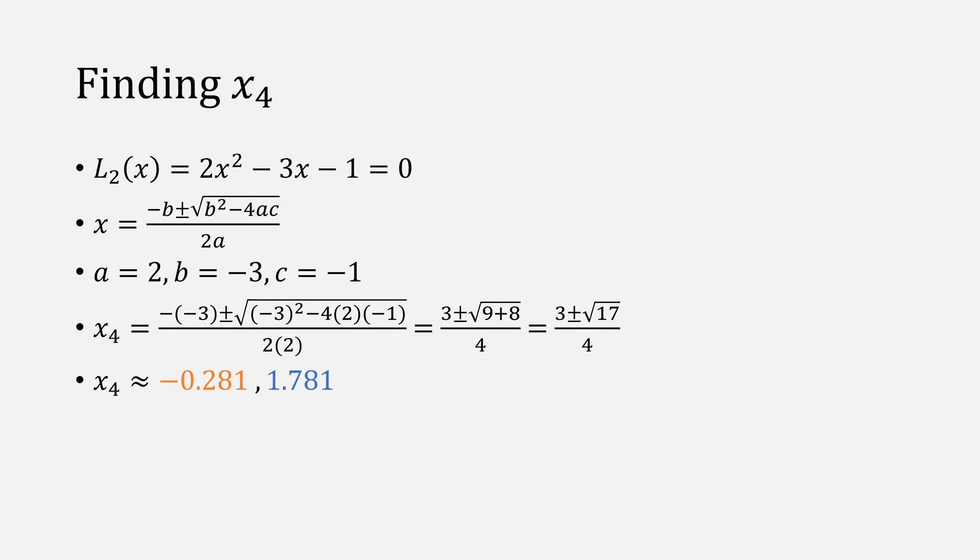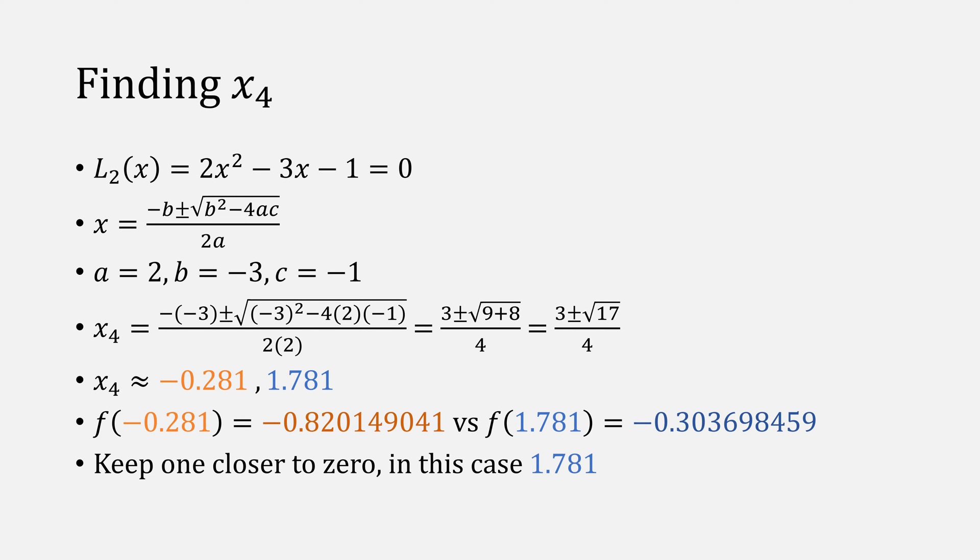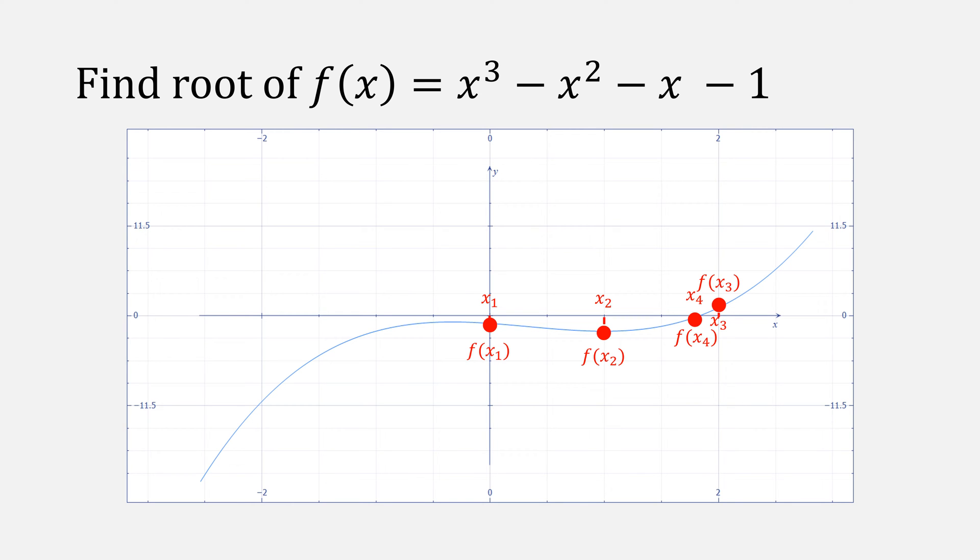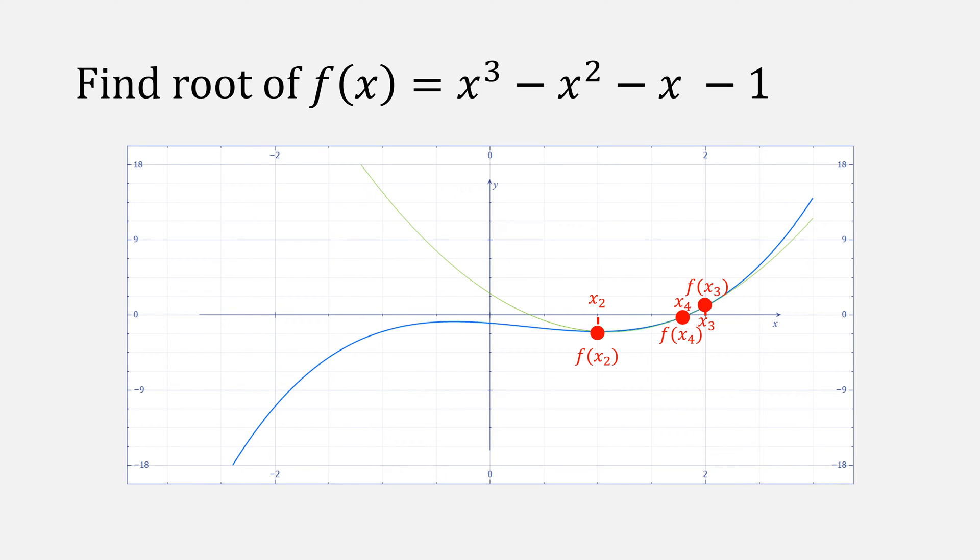So we have to test both of those numbers on our original function, and we keep the one that's closer to zero, which in this case is 1.781. This means we now have four points. We'll only keep the last three though, which will give us our new parabola. That parabola looks something like this, and we'll repeat the process.